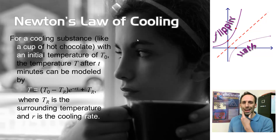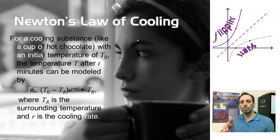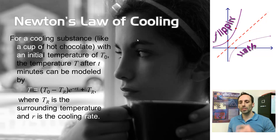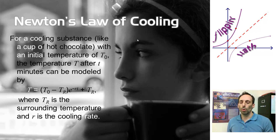Let's talk about an application — Newton's Law of Cooling, named after Isaac Newton. For a cooling substance like a hot cup of chocolate, with an initial temperature T-sub-zero, the temperature T after a time period can be modeled by the equation: T equals, in parentheses, T-sub-zero minus T-sub-R, times E to the negative RT, plus room temperature T-sub-R, where R is the cooling rate for the substance.